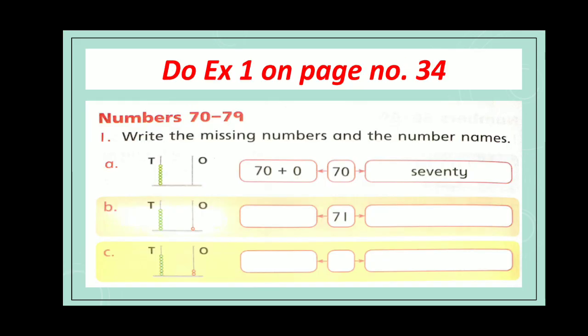Now open page number 34 and do exercise 1. Write the missing numbers and the number names. Numbers from 70 to 79. One has been done for you. Now complete all the remaining parts in book.